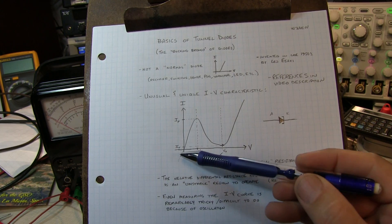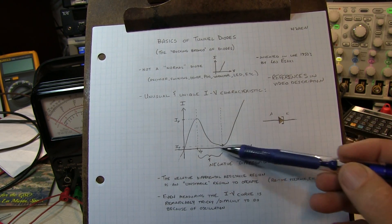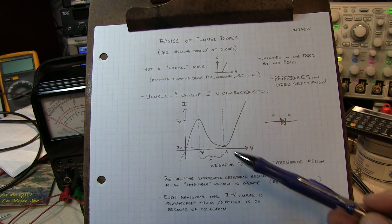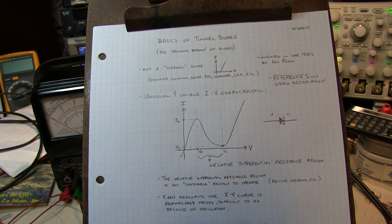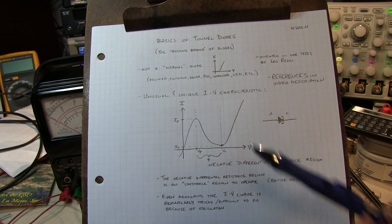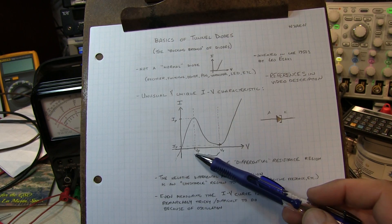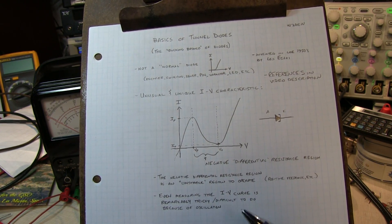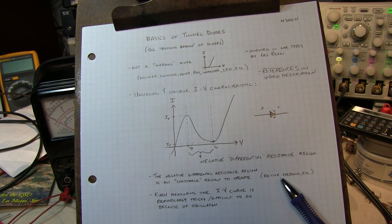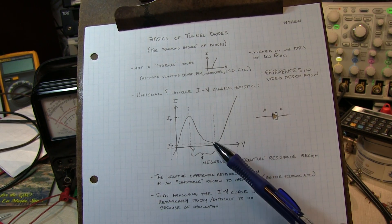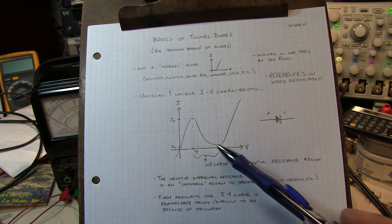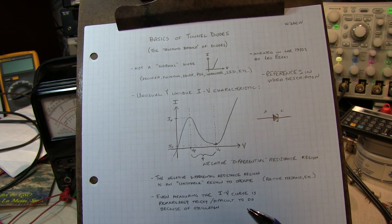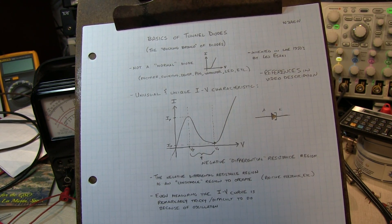So this strange IV characteristic that has kind of this buck or this hump in it is one of the reasons why I call this kind of the bucking bronco of diodes. It kind of bucks the trend of what a normal diode does with this kind of weird humping characteristic here. But this negative resistance region, where the current is falling with increasing voltage, is a very unstable region to operate in because it oftentimes results in positive feedback in a circuit and other things like that.